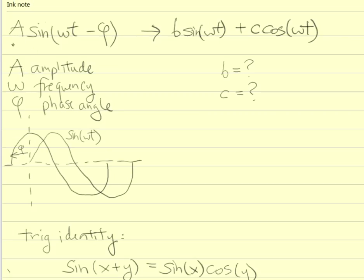Basic definitions: A is the amplitude of the wave. Omega is the frequency. T is time. And phi is the phase angle — it shifts the sine wave from the origin by the phi amount. Our goal is to get into a form with unknown coefficients on sine and cosine, figuring out if we can rewrite the single-sine expression to look like a linear combination of sines and cosines, and determine what the coefficients b and c should be.